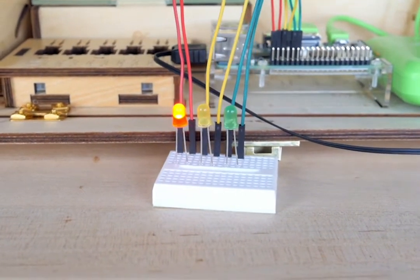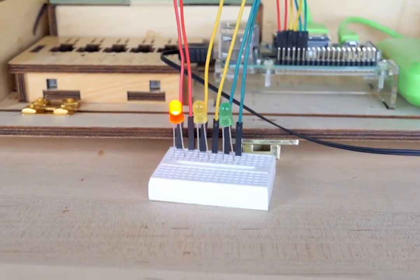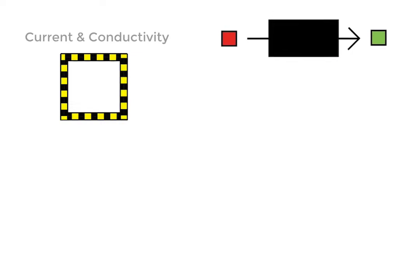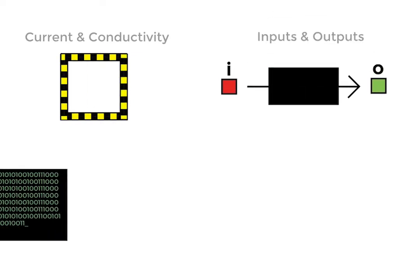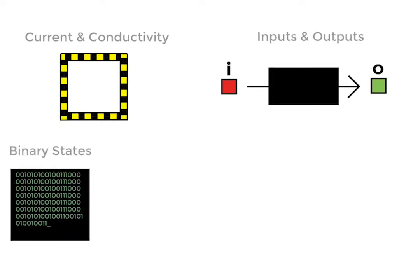In each level of the game, students will follow an engaging storyline to solve electronics challenges that will allow them to complete each level. In the process, they will learn about the concepts of electrical current, power, types of circuits, and how components function in a circuit.